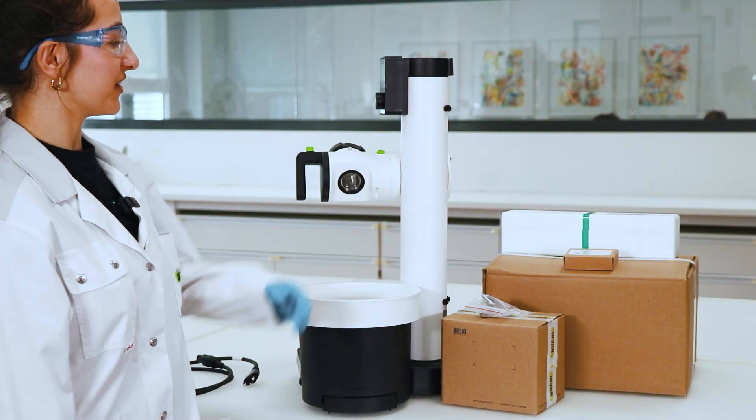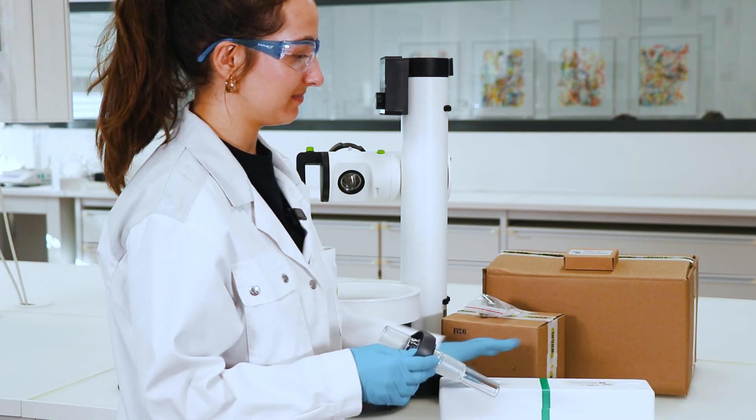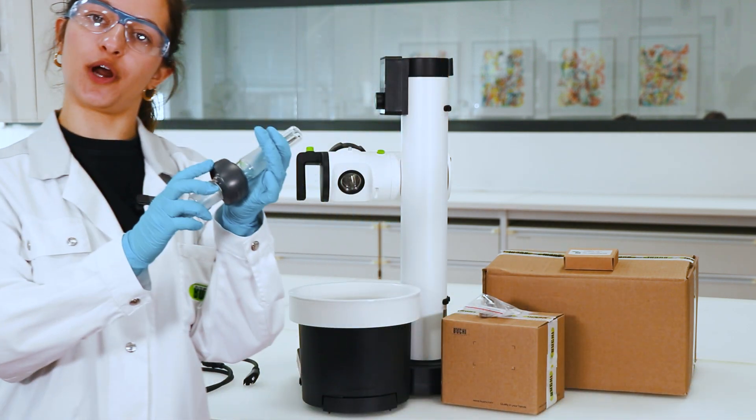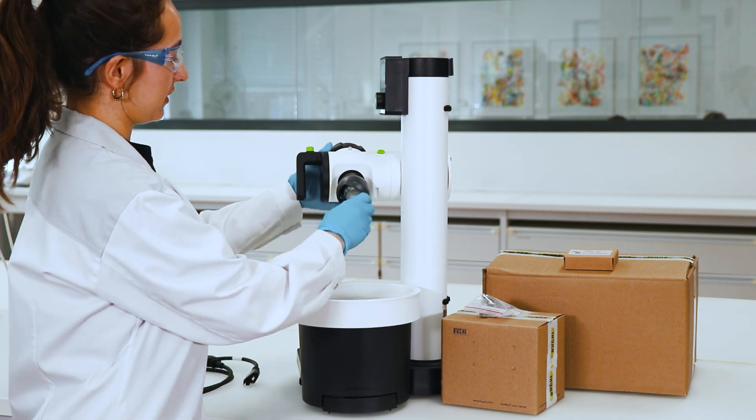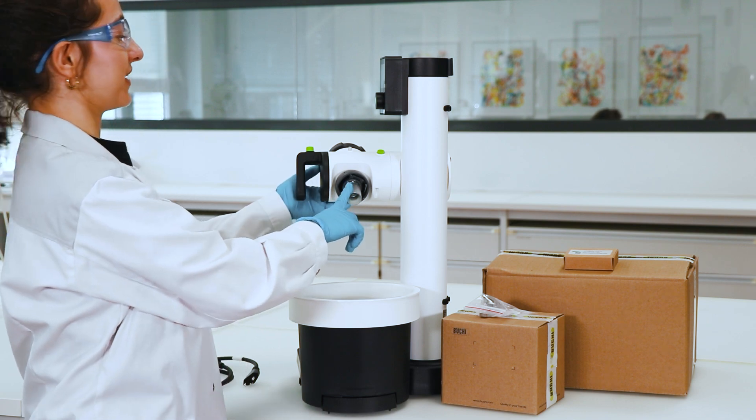Okay, so the first thing you do is you install the vapor duct. It comes with the combi clip, so you just insert it here. And when you hear this click you know you've inserted it correctly.